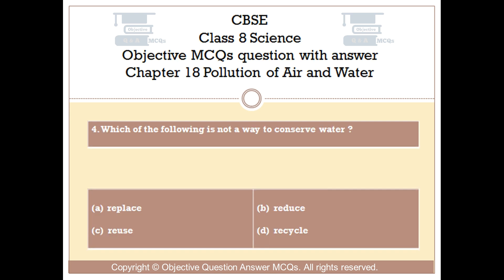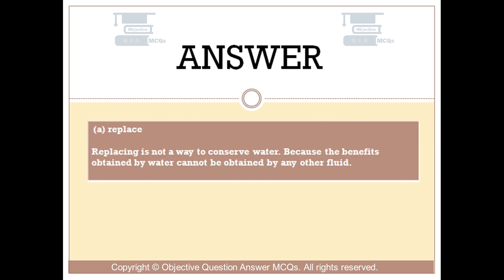Question number 4. Which of the following is not a way to conserve water? Option A: Replace. Option B: Reduce. Option C: Reuse. Option D: Recycle. The right answer is Option A — Replace. Replacing is not a way to conserve water, because the benefits obtained by water cannot be obtained by any other fluid.